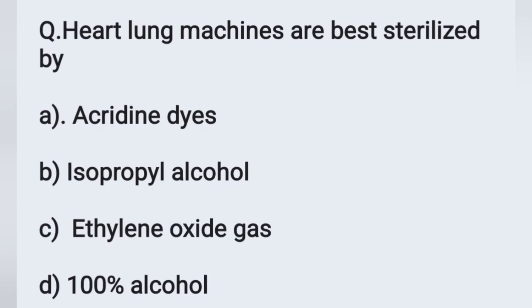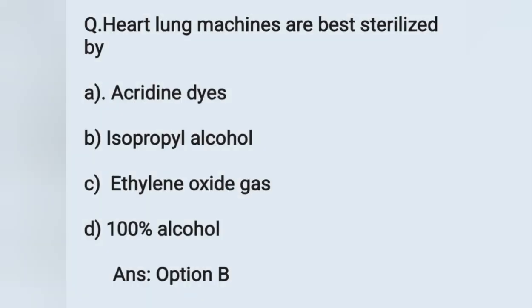The next question: Heart lung machines are best sterilized by — option A: acridine dyes, option B: isopropyl alcohol, option C: ethylene oxide gas, option D: 100% alcohol. Heart lung machines are sterilized by ethylene oxide gas. Option C is the correct answer. Ethylene oxide is also used for sterilization of disposable syringes, endoscopes, disposable catheters, and disposable transfusion sets.